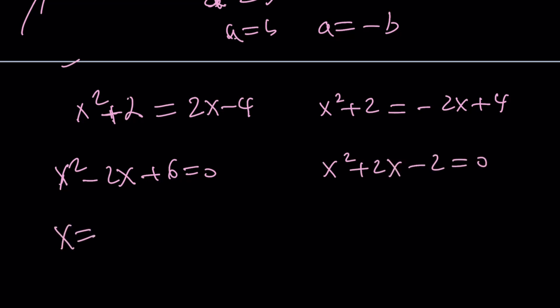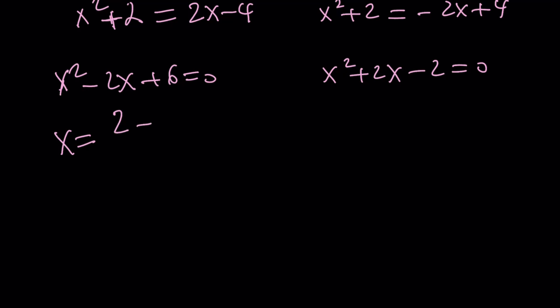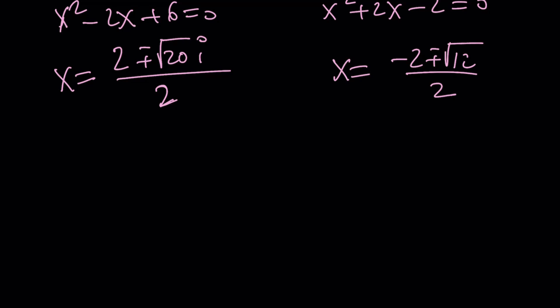Obviously, this one has no real solutions. Negative b plus minus the square root of b squared, which is 4, minus 24. That's going to be a negative 20. That's going to be 2 square root of 20i. Divide by 2. And then the second one is going to be negative b plus minus the square root of b squared, which is 4, plus 8, which is 12. And it's going to be the square root of 12 divided by 2. Now, consider the fact that this is 2 root 5. So, we can kind of write this as 1 plus minus root 5i. And we can write these as negative 1 plus minus root 3. Make sense? So, there are four solutions. Two of them are not real.